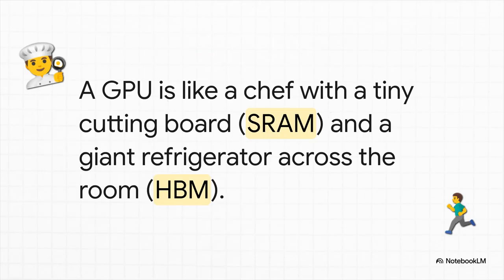Okay, here's a great way to think about it. A GPU is like a world-class chef who can chop things up at unbelievable speeds. But their cutting board, that's the fast on-chip memory, is tiny. And all the ingredients, that's our KV cache, are stored in a giant refrigerator on the other side of the kitchen. That's the slower main memory.